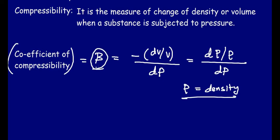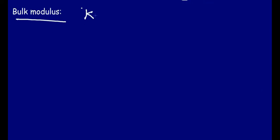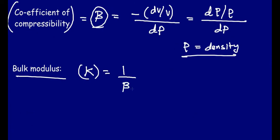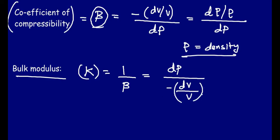Bulk modulus of elasticity is denoted by K and is the reciprocal of compressibility, that is K = 1/beta. Hence, bulk modulus equals dP divided by minus dV/V. The negative sign implies that volume shrinks on application of external pressure.